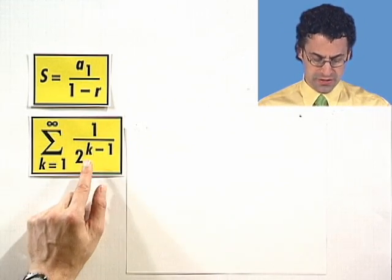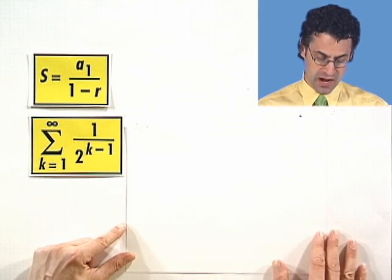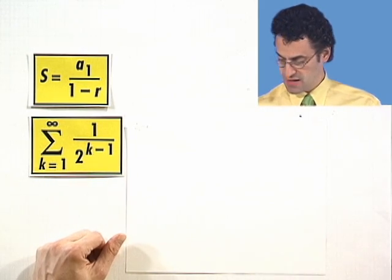Of 1 over 2 to the k minus 1. This is a geometric series where the constant ratio is 1 half. And so what do I see?